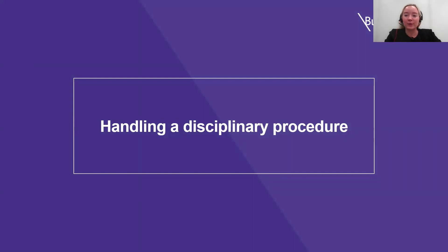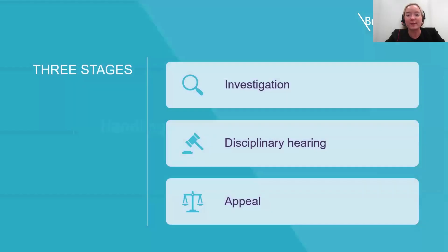Some of you on the call will be very familiar with how to handle disciplinary procedures, but just to set the scene, we thought we'd start by outlining some of the basics. Generally speaking, there are three stages in a disciplinary process, and ideally a different person should be responsible for each stage, with increasing seniority as you go along. The first stage is the investigation. This is a crucial stage, even in cases of apparently obvious guilt and potentially even where the employee admits culpability. The amount of investigation will vary quite significantly depending on the individual circumstances, and an employer must carry out investigation as is reasonable in all the circumstances.